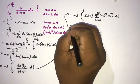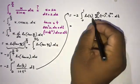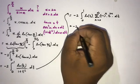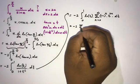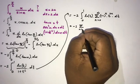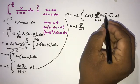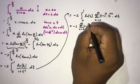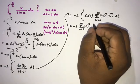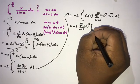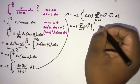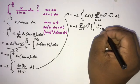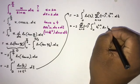We can switch the integral sign and the sigma notation, giving us minus 2 times the sum from n = 0 to infinity of (−1)^n times the integral from 0 to 1 of t^(2n) times natural log(t) dt.